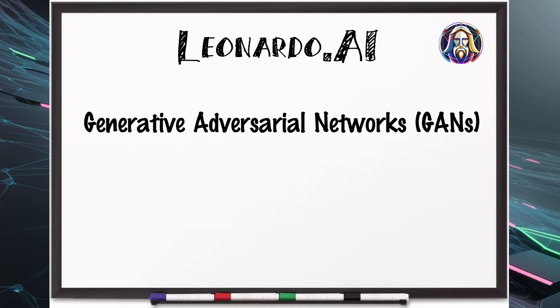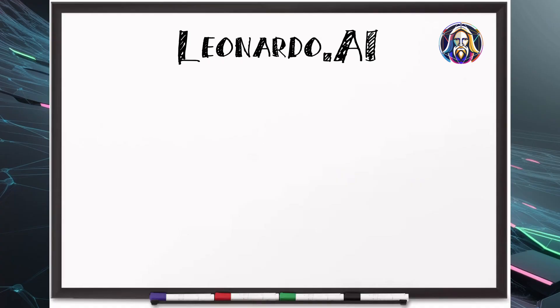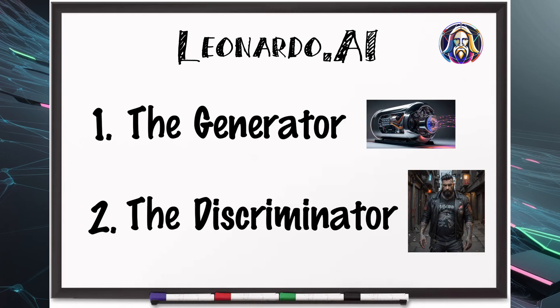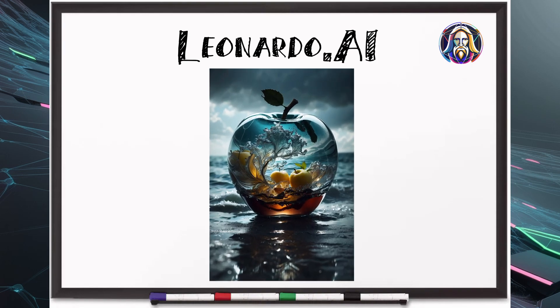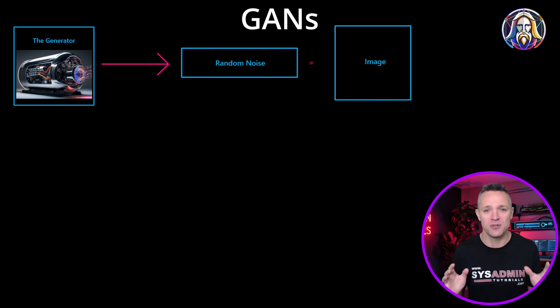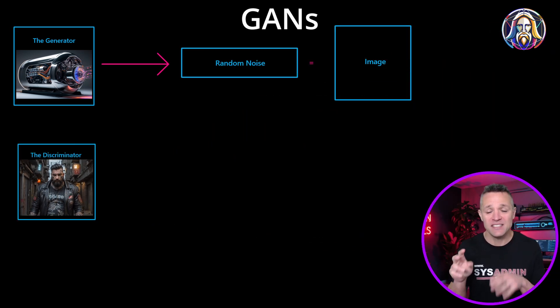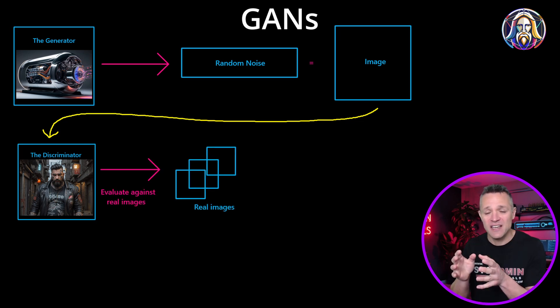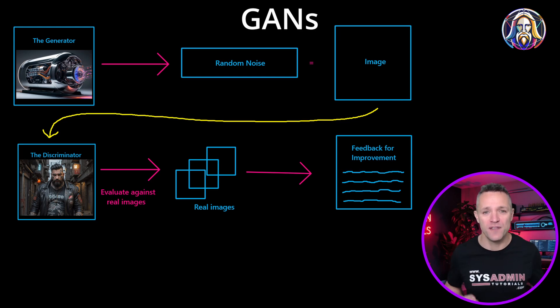The technology behind Leonardo AI involves sophisticated models like generative adversarial networks, or GANs, and diffusion models. GANs consist of two neural networks: the generator and the discriminator, which work together to create beautiful realistic images. The generator creates images based on random noise, while the discriminator takes that generated image, evaluates it against real images, and provides feedback on how it can improve those results.